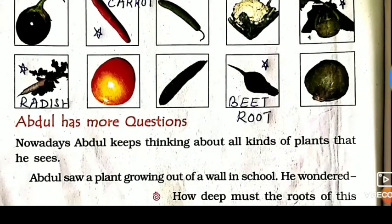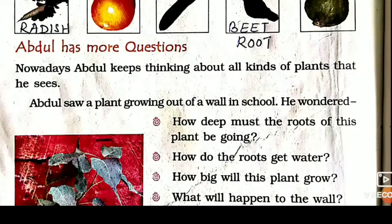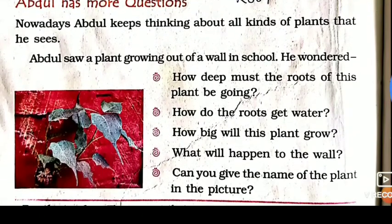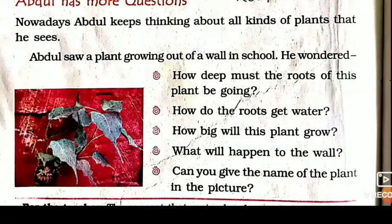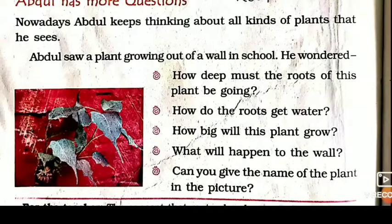Now the next topic is 'Abdul has more questions.' Abdul has many questions. Abdul keeps thinking about all kinds of plants that he sees. He sees different plants from the soil, then he sees plants on the wall.